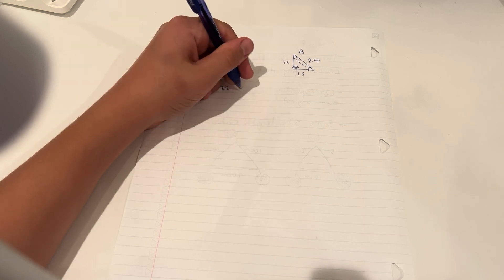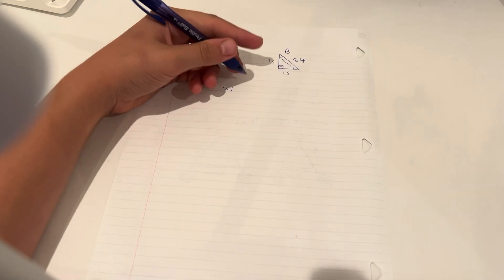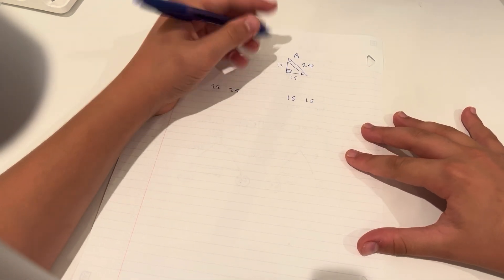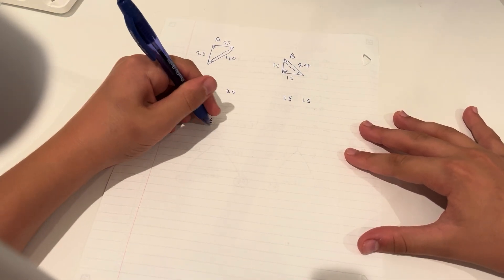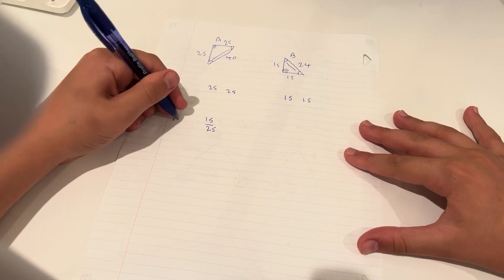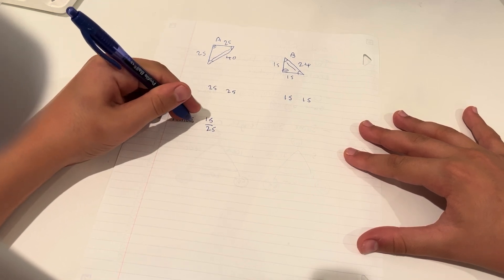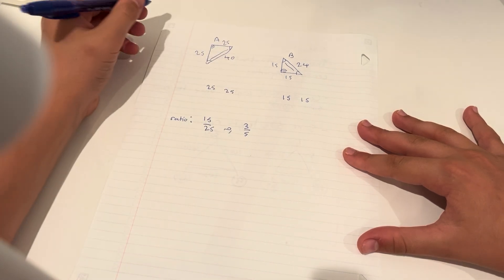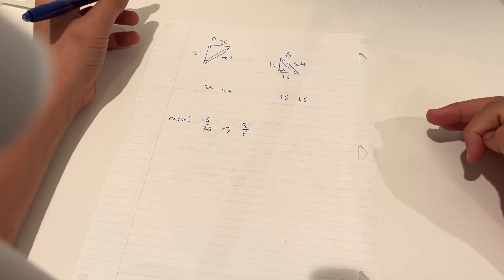Now let's look at ratios. So we have two sides, which are 25 and 25. This one has two sides that are 15 and 15. So this one should be 15 25ths smaller. So the ratio is 15 25ths smaller, which is the same as three over five. But does this apply to the entire thing?